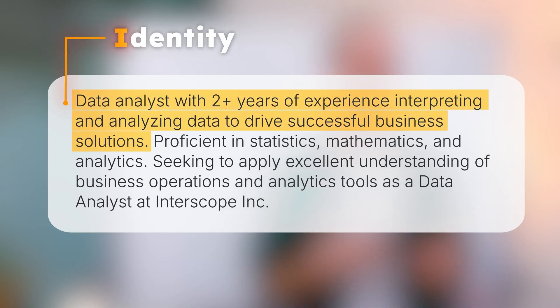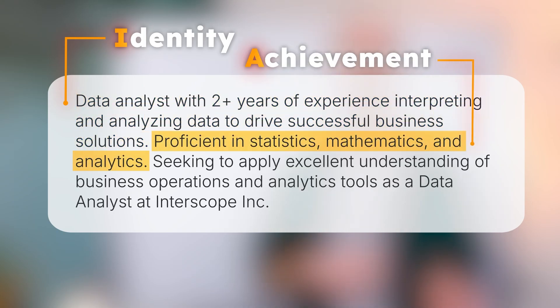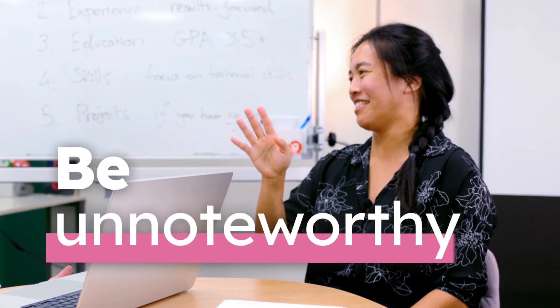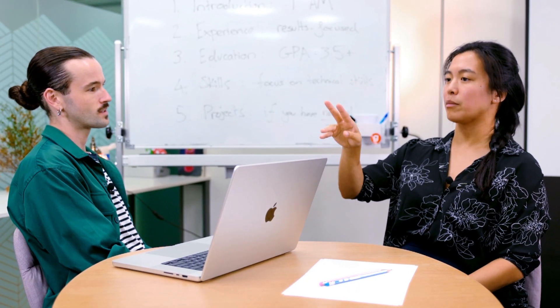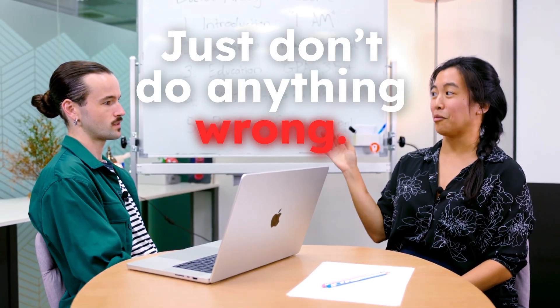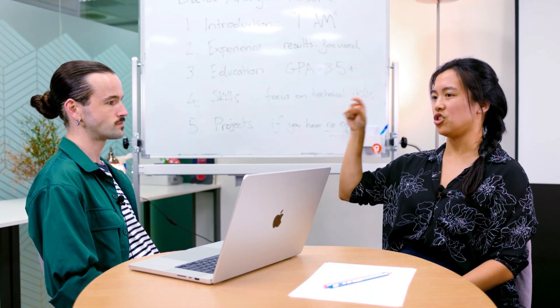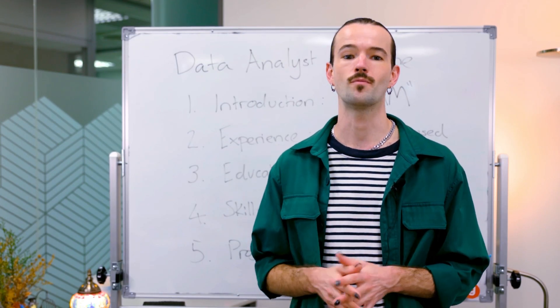Begin with a sentence summarizing your identity — your profession, a key strength, or where you are in your career. Then drop in an achievement that reflects your expertise, and the motivation that drove you to apply, which could be something you really like about the hiring company or a specific value you know you can deliver. I think the best a resume introduction can do is be unnoteworthy — so that the hiring manager starts reading your work experience. Just don't do anything wrong. Don't write anything too descriptive or fluffy. Any description of your achievements in detail should go in the cover letter or work experience section. The resume introduction should just be short, sweet, hit all the check marks, and then move on. The aim is to give employers a glimpse of what makes you a great candidate.